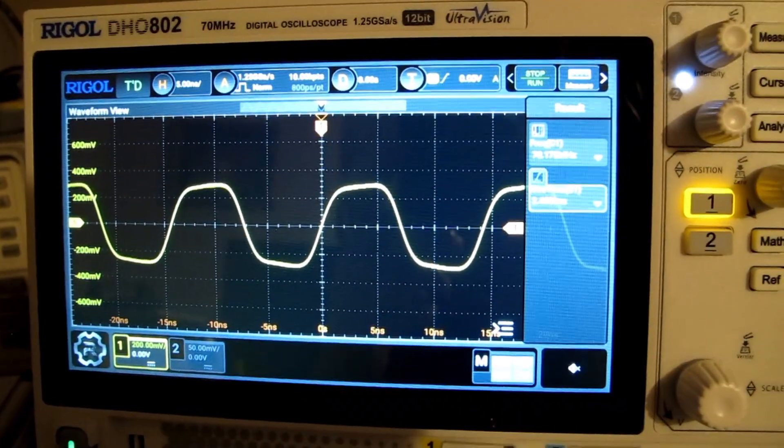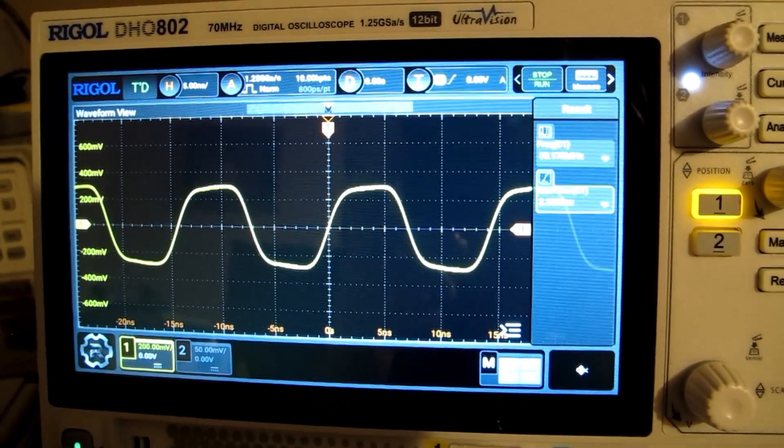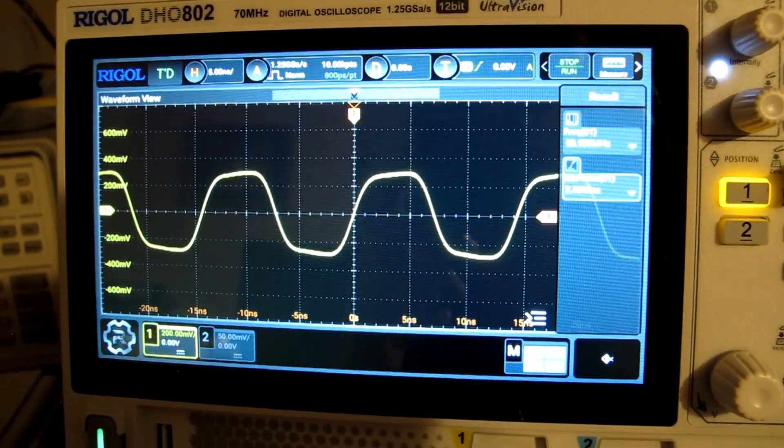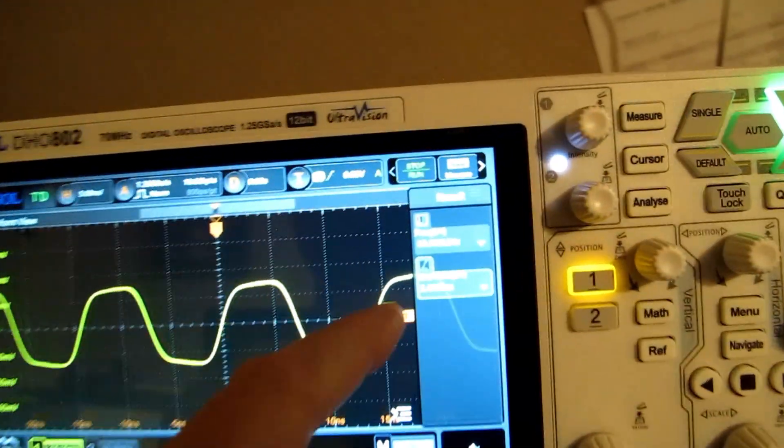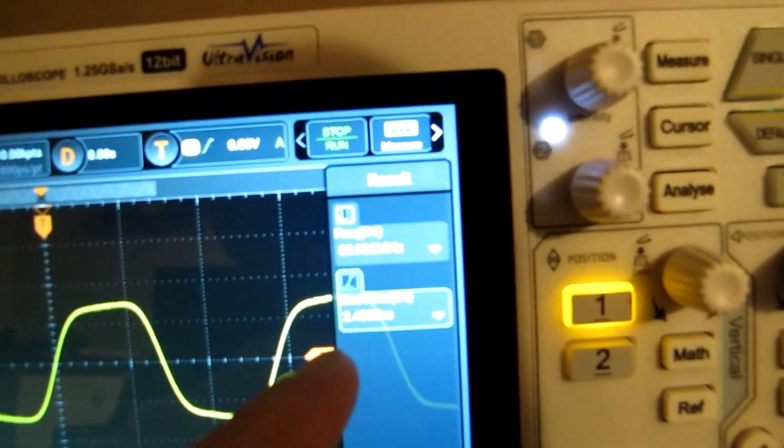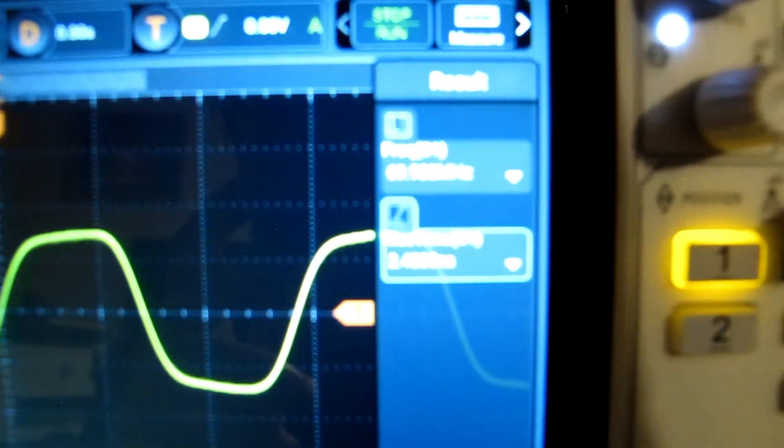Here we are zoomed in on the horizontal. I turned on the frequency measurement and the rise time measurement. Hard to see on this camera, but it's 70 megahertz and reading 2.5 nanoseconds for the rise time.